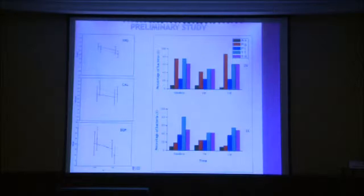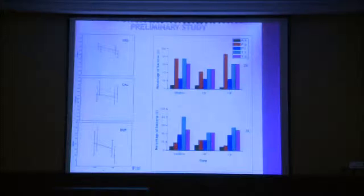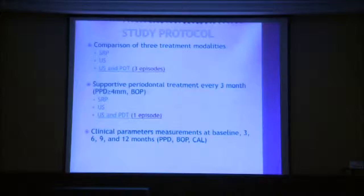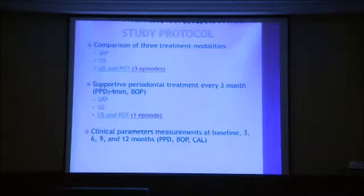With three applications of PDT, we achieved greater reduction after three months in bleeding on probing and also in subgingival pathogens. So in the final protocol, we used three episodes of PDT after mechanical debridement. We compared three treatment modalities: scaling and root planning with hand instruments, ultrasonic scaling, and ultrasonic scaling followed by three episodes of PDT in initial periodontal treatment.